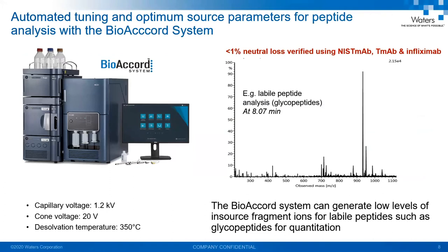The streamlined workflow method for peptide MAM starts with data acquisition using the BioAccord system. The BioAccord system addresses one of the biggest challenges of peptide analysis — in-source fragmentation or source-induced modifications. The auto-tune parameters, coupled with the generic source settings, managed to reduce source-induced fragmentation of glycopeptides of NISMAP digest down to less than 1%. We verified these results in trastuzumab digest as well as in infliximab digest.